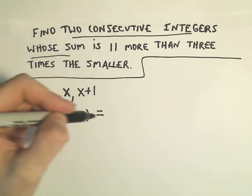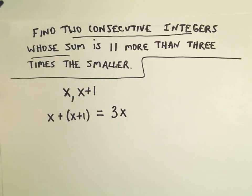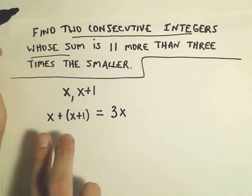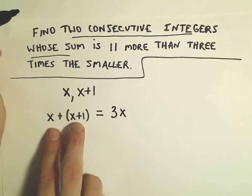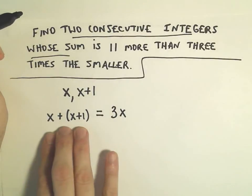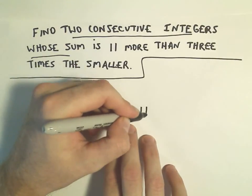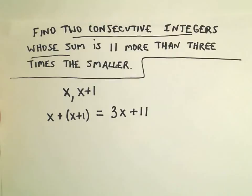It's 11 more than 3 times the smaller. 3 times the smaller I could write as 3 times x. But they're not equal - the sum on the left side is actually 11 more than this side. Since this side is bigger, we would have to put a plus 11 over here, and now everything would be equal.